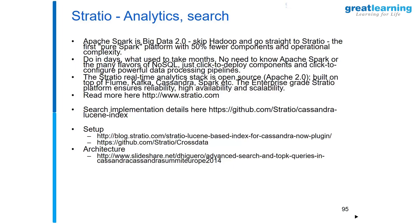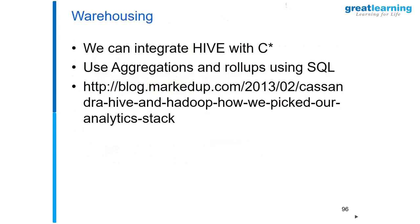It's not just Solr and Elasticsearch — you can use Stratio as well. For warehousing, you can look at this URL which basically shows Hive, Hadoop, and how to pick your analytics stack. It's a nice read. You can use Hive along with Cassandra — you can create something called an external table and start reading data from Cassandra.